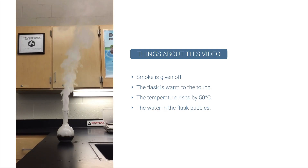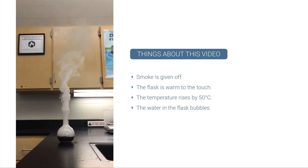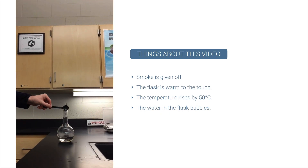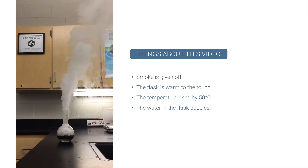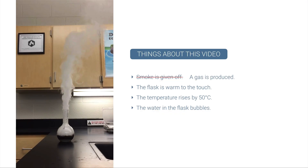Can you pick out which are the observations and which are inferences? And for the inferences, can you rephrase them so that they're more observational instead of inferential? The first one — smoke is given off. It seems like smoke is given off but we don't know that that's smoke. We do know that that is a gas, or at least it appears to be a gas, so maybe it's better to say a gas is produced.